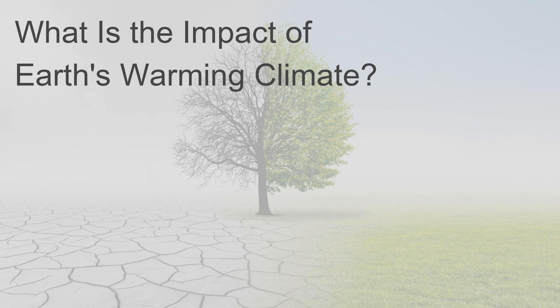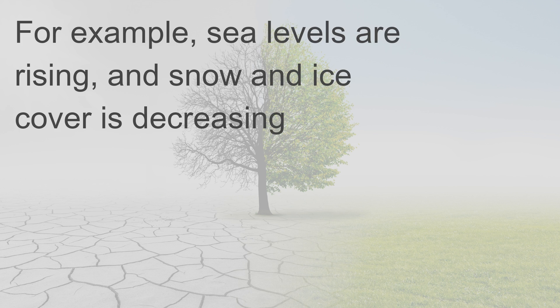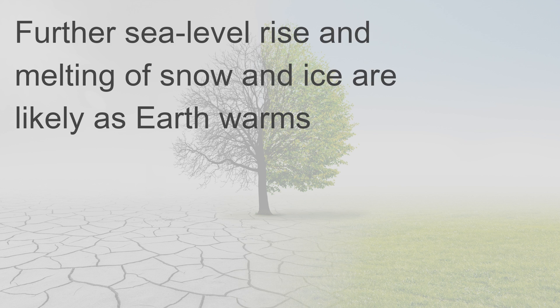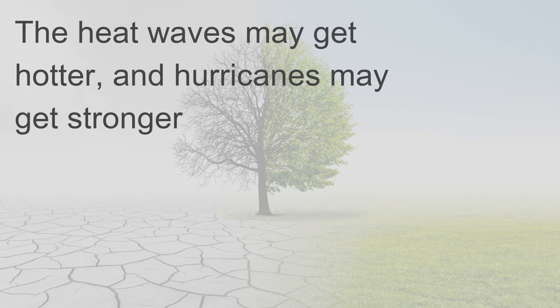What is the impact of Earth's warming climate? Some impacts are already occurring — sea levels are rising and snow and ice cover is decreasing. Rainfall patterns and growing seasons are changing. Further sea level rise and melting of snow and ice are likely as Earth warms. The warming climate will likely cause more floods, droughts, and heat waves. Heat waves may get hotter and hurricanes may get stronger.